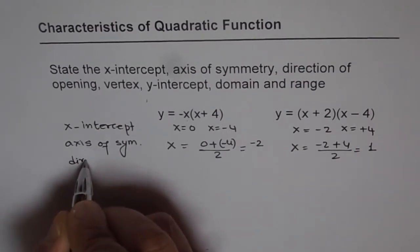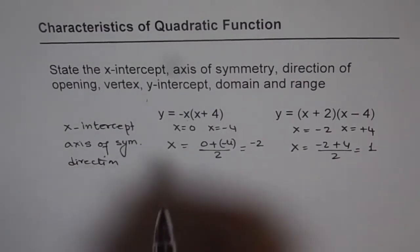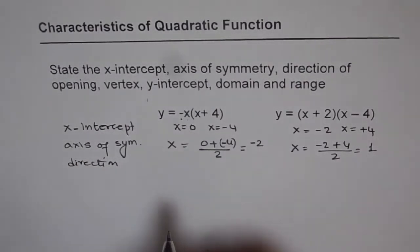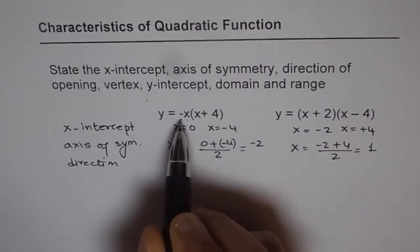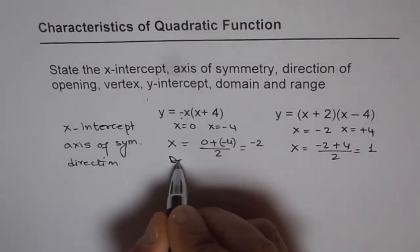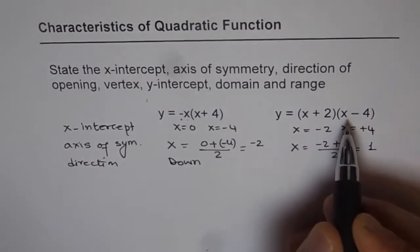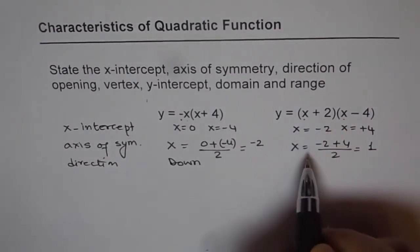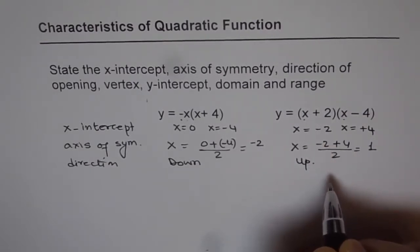Now to find direction of opening, direction of opening is straight from the leading coefficient. Leading coefficient is negative here. Negative means it opens downwards. In this case, when you multiply x times x, you get positive x squared. So it is going to open upwards.